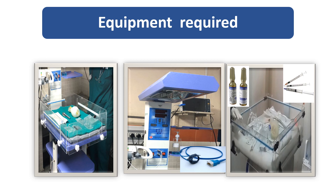A laryngoscope with all sizes of blades should be available. If intubation fails, a laryngeal mask airway should also be available. All sizes of syringes — 2, 5, and 10 cc — and a nasogastric feeding tube will also be needed. A pre-filled syringe with adrenaline diluted 1:10,000 should be available, along with an umbilical venous catheter.